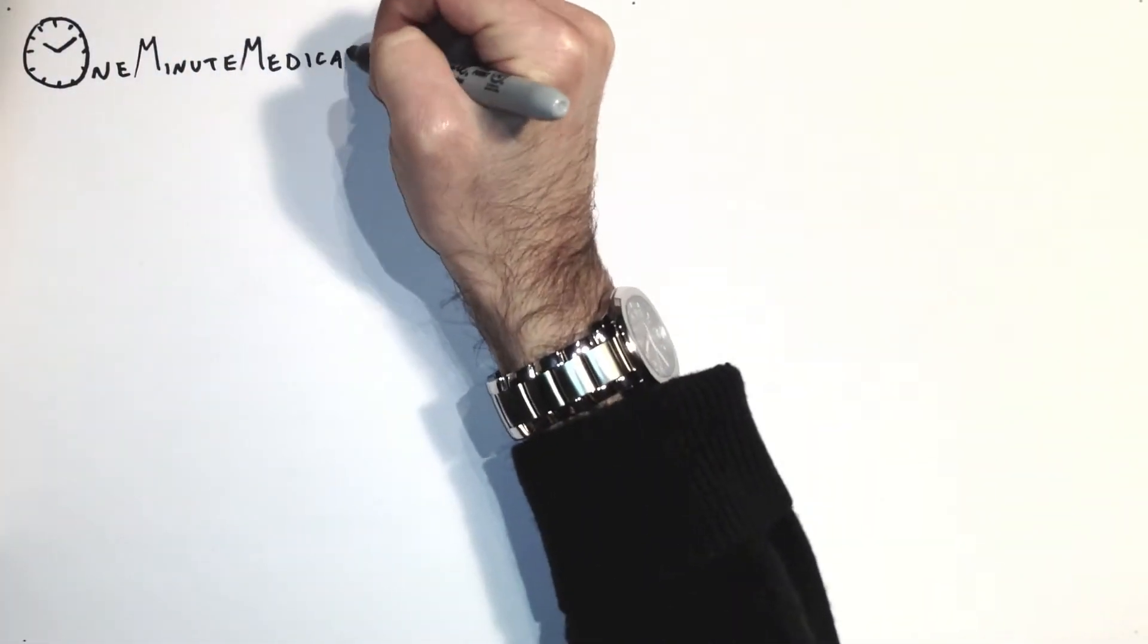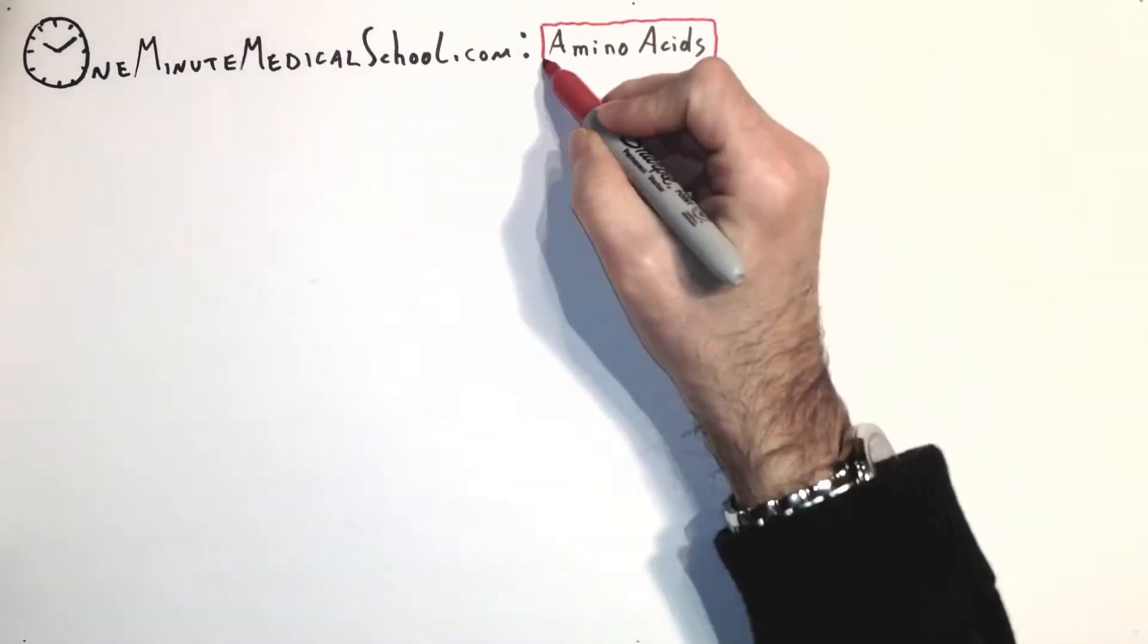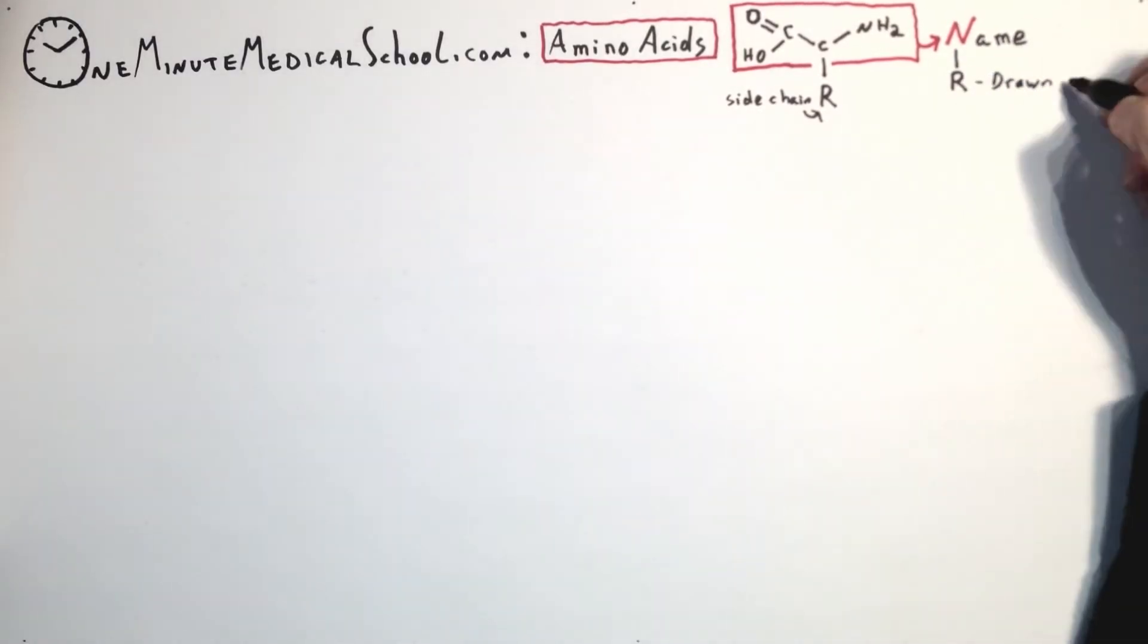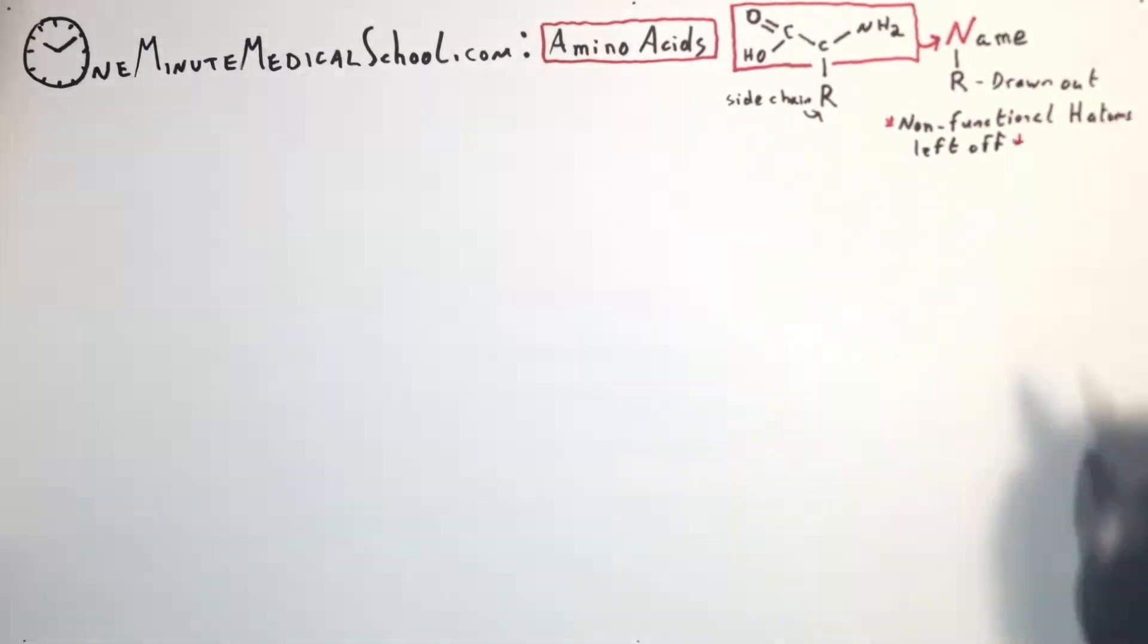There are 20 amino acids that make up every protein in your body. They all have this carboxyl amino group, so we don't need to draw that every time. Instead, let's put the one-letter name identifier in red.